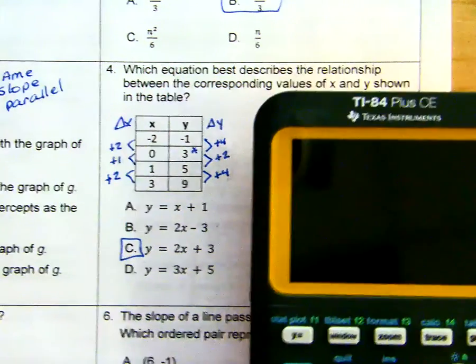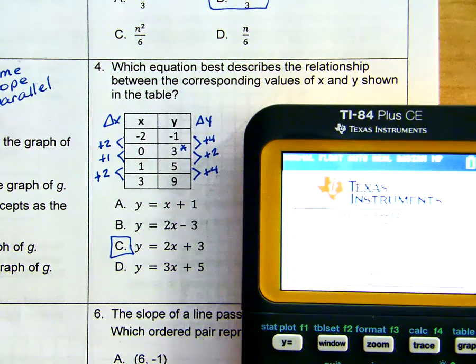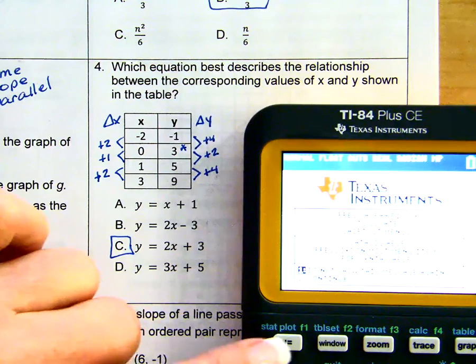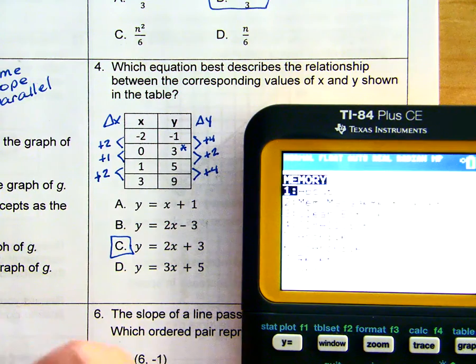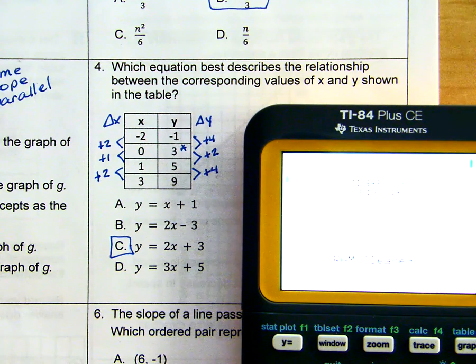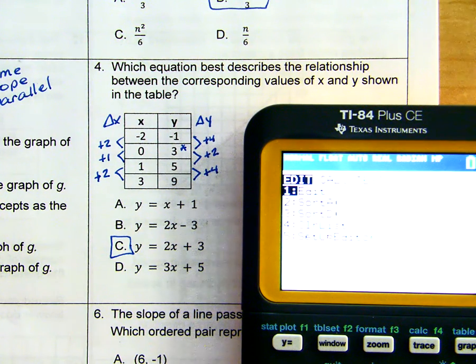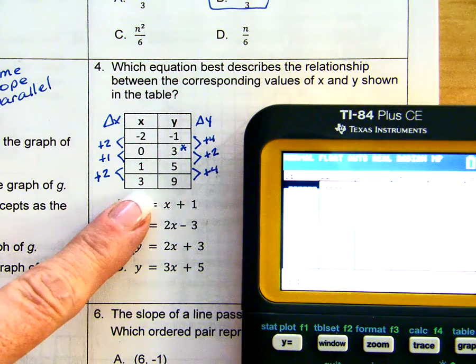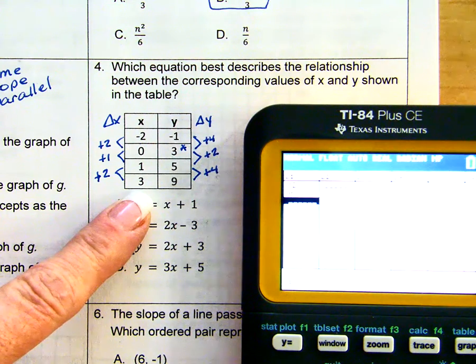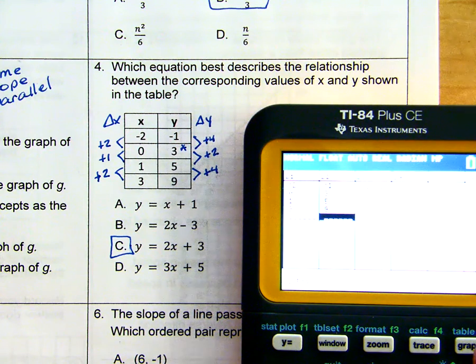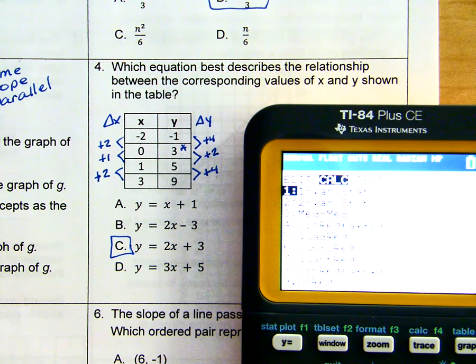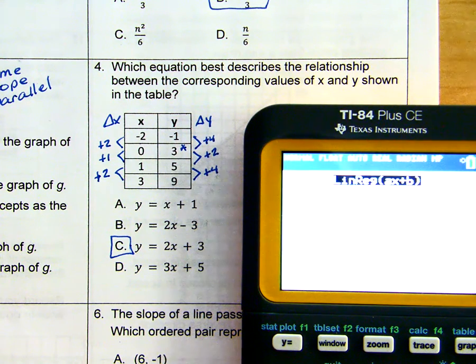Our other option is to do this in the calculator. So let me clear out the calculator. We go to stat, edit, and we'll put negative 2, 0, 1, and 3 into L1. Negative 1, 3, 5, and 9 into L2. Go back to stat, we're going to calculate our linear regression, which is number 4.